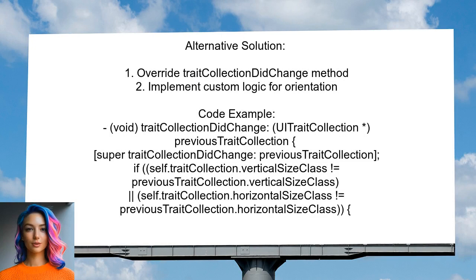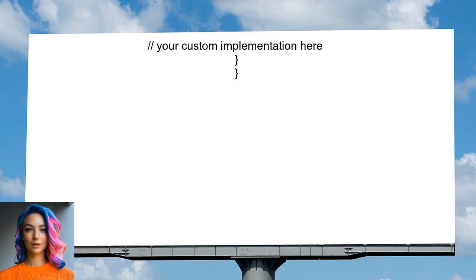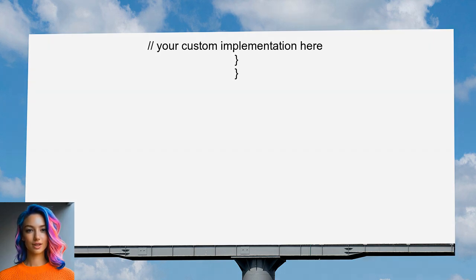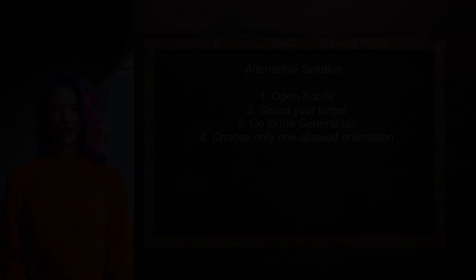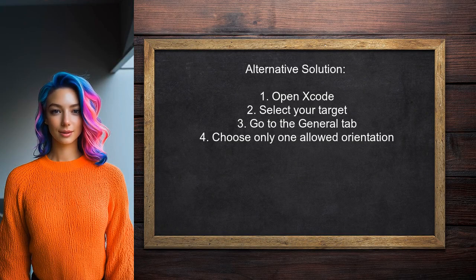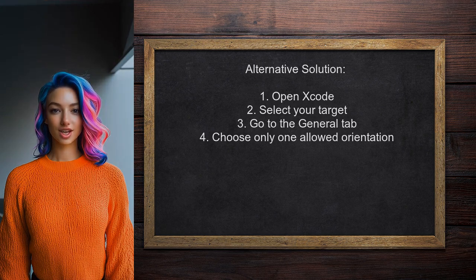One alternative solution is to override the traitCollectionDidChange method. This allows you to maintain the desired orientation when the device's size classes change, and you can implement custom logic within this method to handle orientation adjustments. Additionally, you can set a single allowed orientation in Xcode — go to your target settings, select the General tab, and choose only one orientation to enforce.